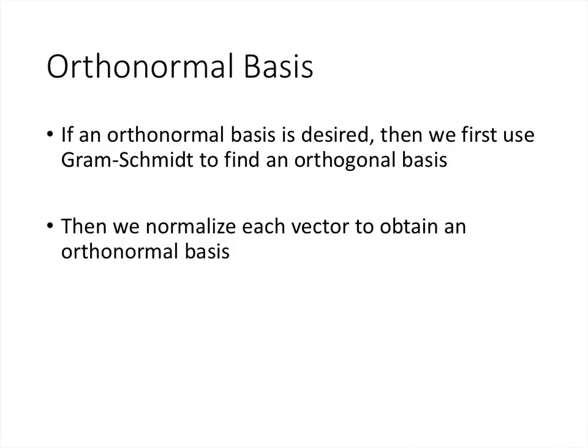Now what do we do if what we really wanted was an orthonormal basis? Well, in that case, all we do is first use the Gram-Schmidt process to find an orthogonal basis, and then we just normalize each vector to obtain an orthonormal basis. Remember that to normalize a vector, you just divide it by its length. So you take the v vectors, and you look at the length of each of those vectors. And if that vector isn't already a unit vector, you divide that vector by its length to create a unit vector.